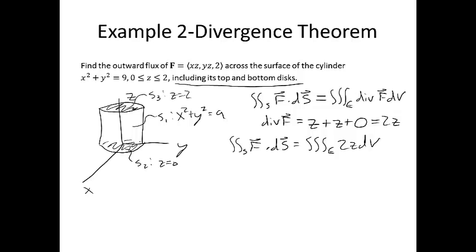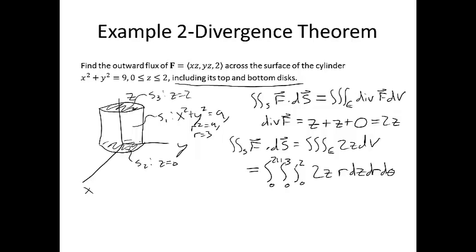This is a triple integral like any other in Calc 3. You can integrate in rectangular coordinates or switch to cylindrical or spherical coordinates if appropriate. Since our boundary is a circular cylinder, it makes sense to switch to cylindrical coordinates. In cylindrical coordinates, S1 is r equals 3. The triple integral of 2z dV in cylindrical becomes r dz dr d-theta. The projection onto the xy-plane is the interior of x squared plus y squared equals 9, so r goes from 0 to 3 and theta goes from 0 to 2 pi, and z goes from 0 to 2.